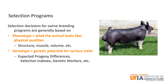Selection decisions for swine breeding programs typically consist of an evaluation of an animal's phenotype and genotype. Phenotypic evaluation is basically what physical attributes does the animal have that will help me reach my production goals as quickly as possible. This would be things like structure, muscle, and volume along with other selection criteria. Genotypic evaluation looks at the genetic potential that an animal possesses for the economically important traits, done through the use of genetic selection tools like expected progeny differences or EPDs, selection indexes, and other tools like marker assisted selection.